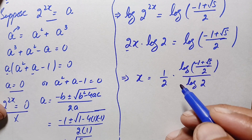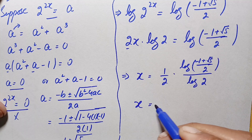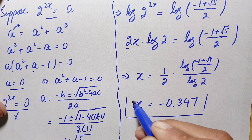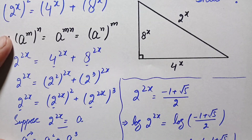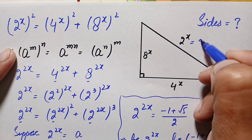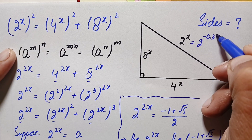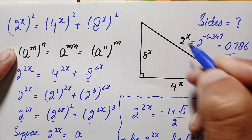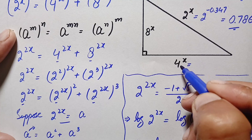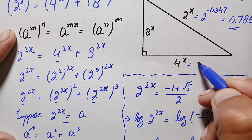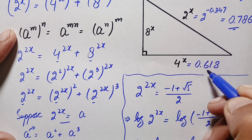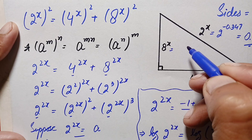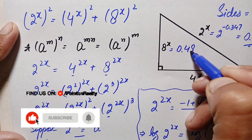Evaluating the right-hand side with a calculator gives x ≈ −0.347. Now we compute the three sides of the right triangle: the hypotenuse is 2^(−0.347) ≈ 0.786; the base is 4^(−0.347) ≈ 0.618; and the perpendicular (height) is 8^(−0.347) ≈ 0.485. These are the lengths of the three sides of the right angle triangle.